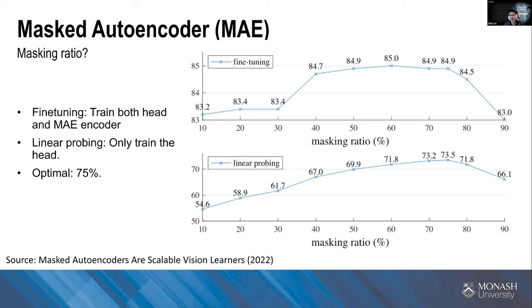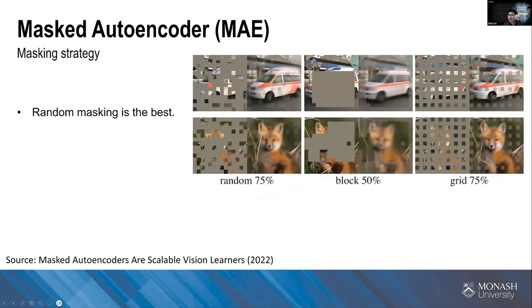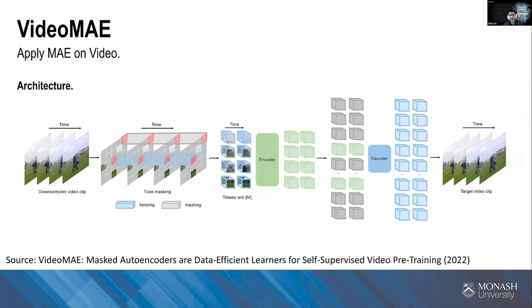They also discuss the masking ratio: 75% is very high compared to tasks like inpainting. They also studied different masking strategies — random masking where tokens are completely random, block masking where masked tokens are grouped together, and grid masking. Random masking was found to be the best.